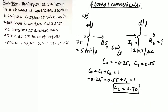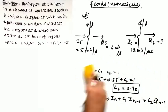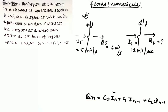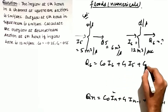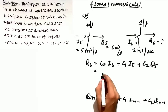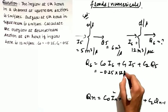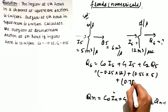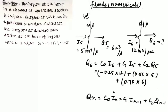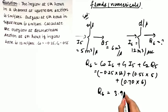The Muskingum equation is: Q(n) = c0·I(n) + c1·I(n-1) + c2·Q(n-1). So Q6 = c0·I6 + c1·I5 + c2·Q5 = (-0.25)(12) + (0.55)(5) + (0.70)(6). When you solve this equation you obtain Q6 = 3.95 m³/s. This is the outflow discharge at the downstream section at the 6th hour.